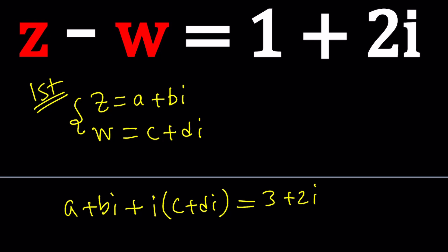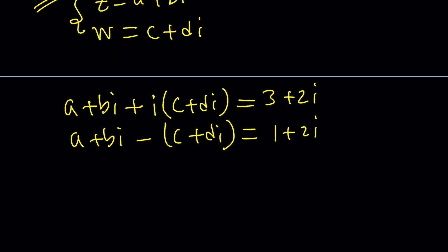And then in the second one, we get a plus bi minus c plus di and that is 1 plus 2i. Awesome.